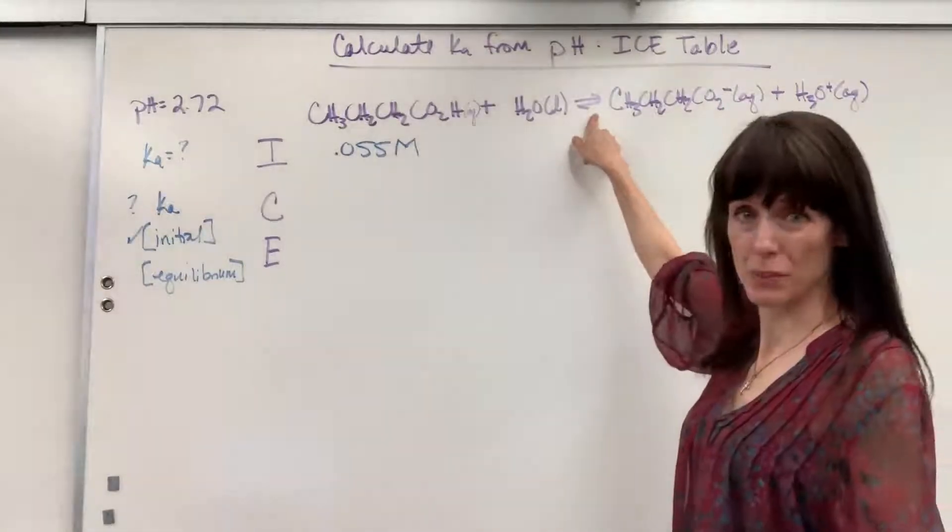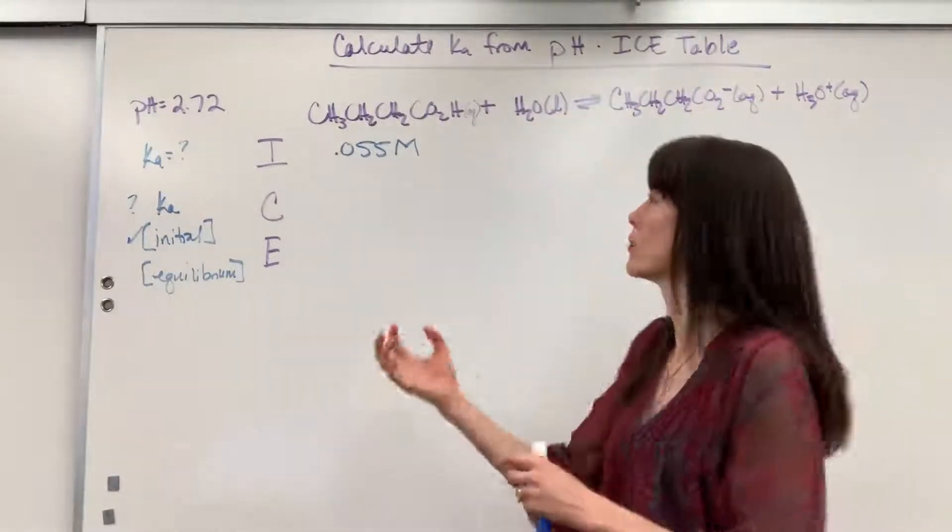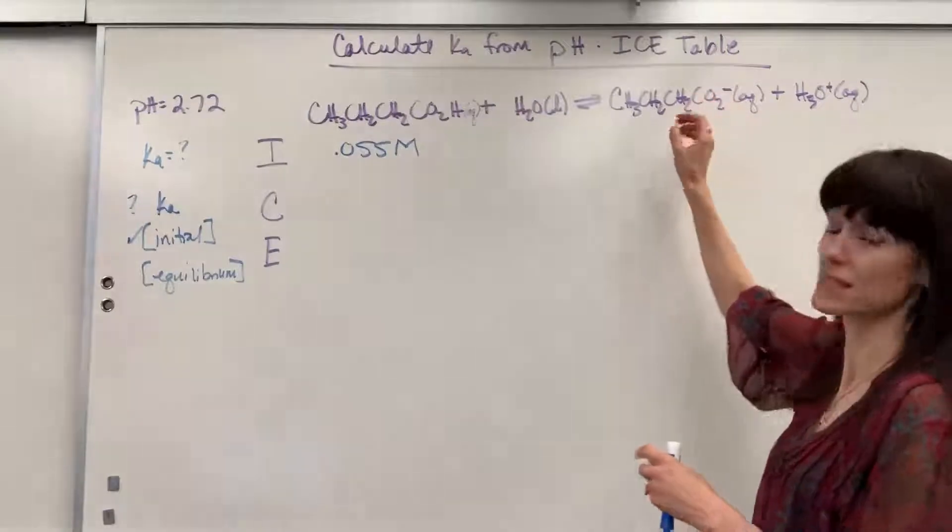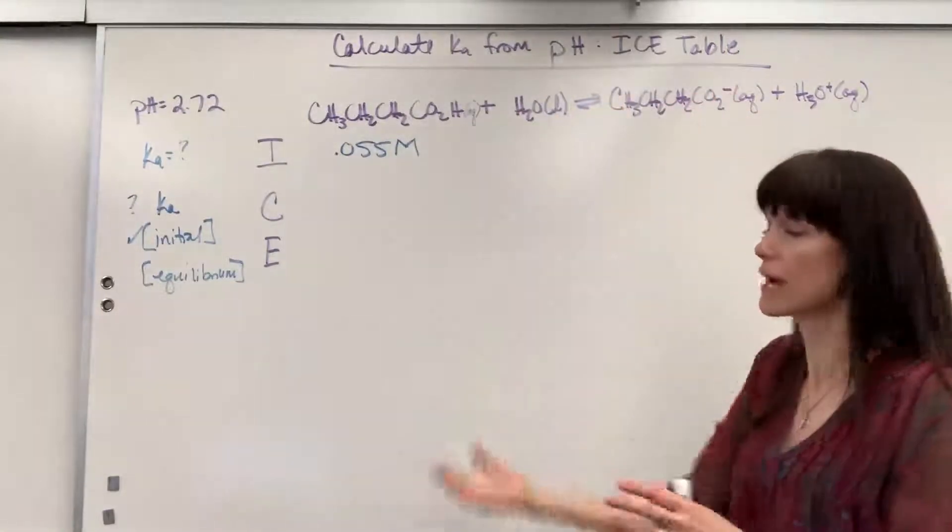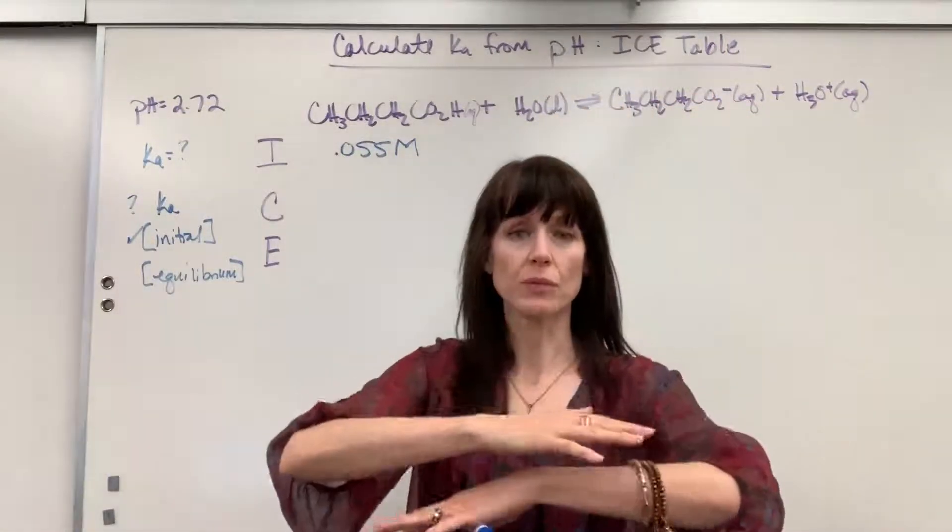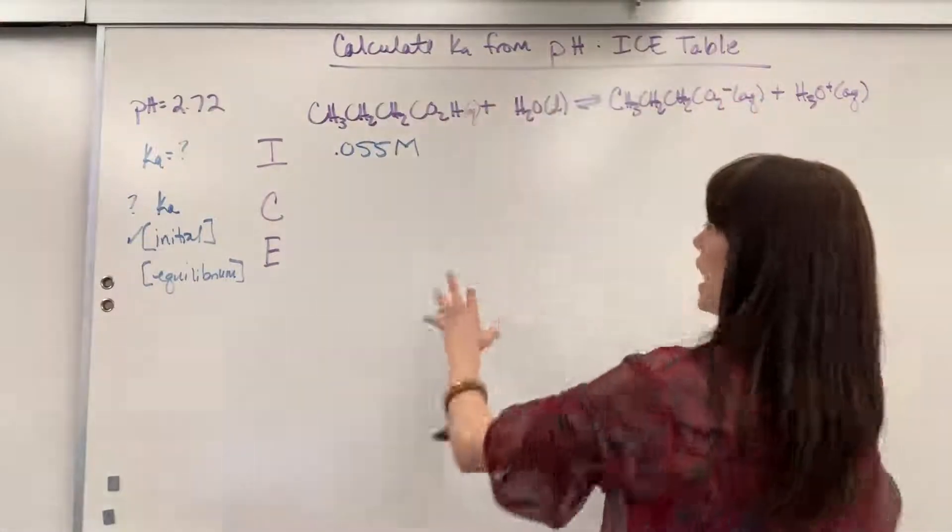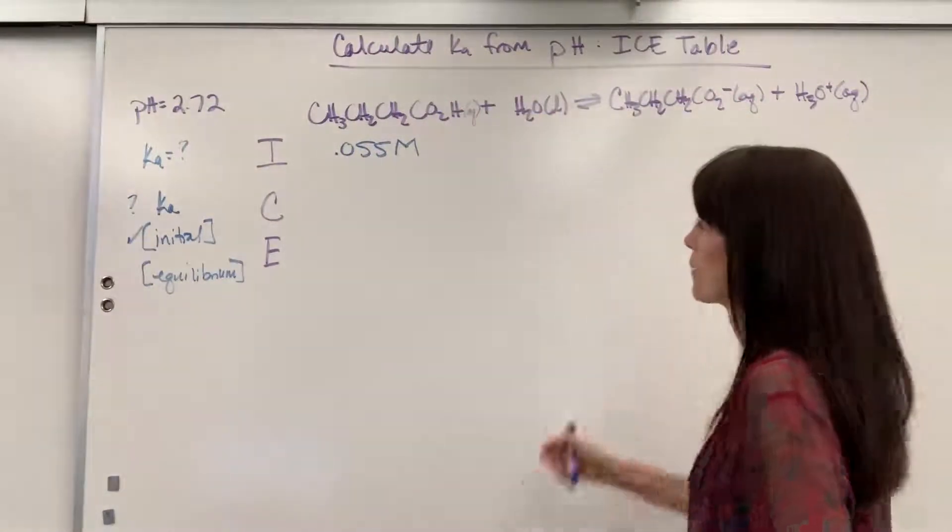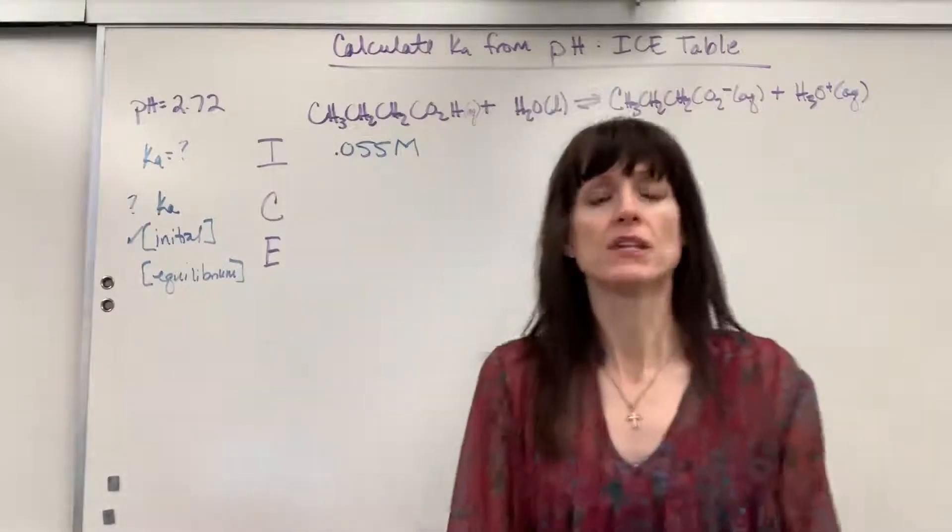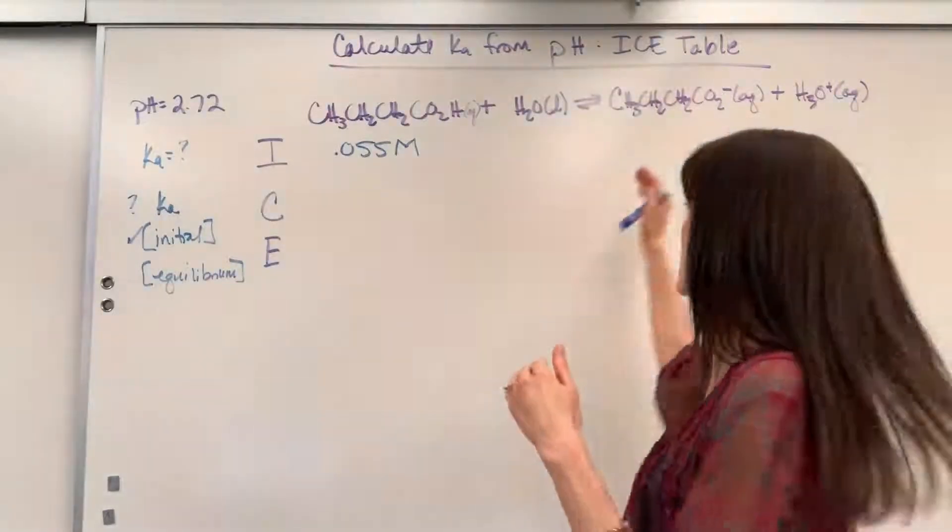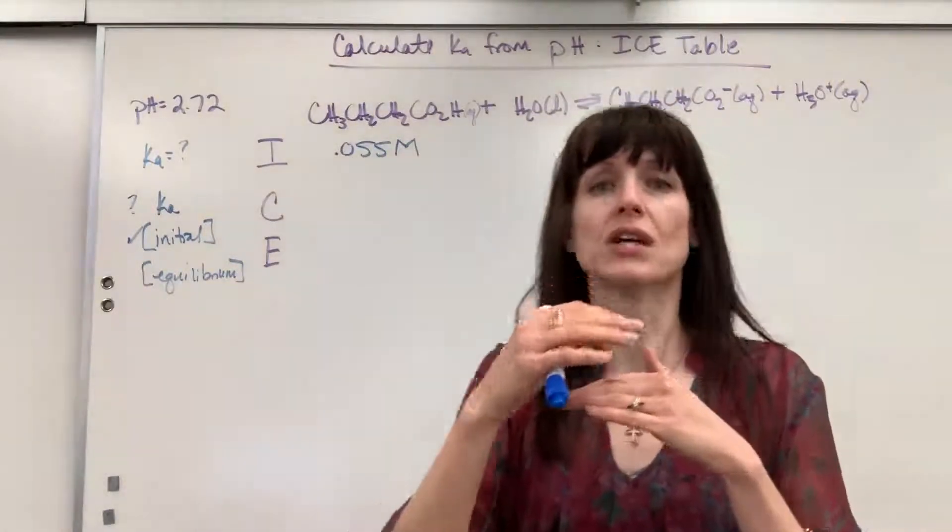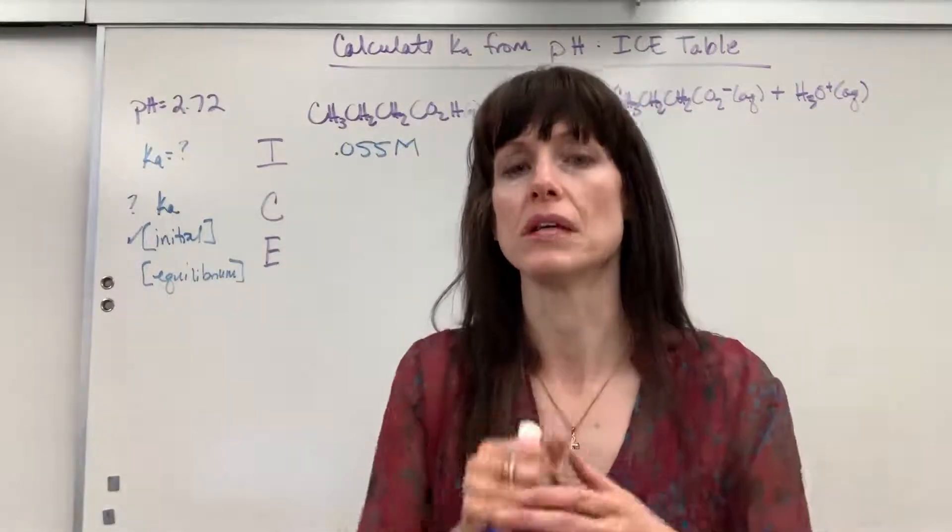So some of it reacts with the water and produces the butanoate ion and the hydronium ion. Now it comes into beautiful equilibrium. The rate at which the reactants change to products is the same rate at which the products change to reactants. It comes into this beautiful equilibrium. And then we have constant concentrations. I have an amount of reactant and amount of product. And that's the K value. It's the ratio of products over reactants.